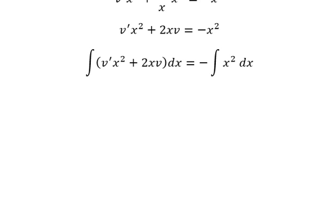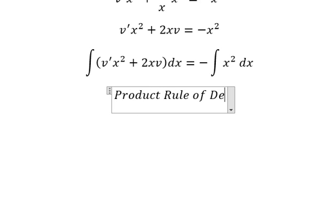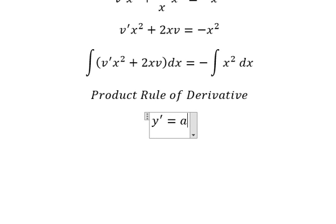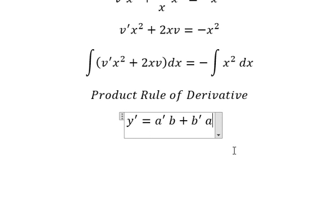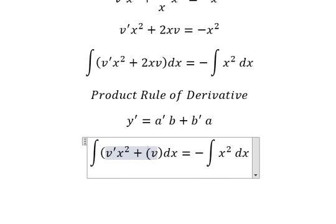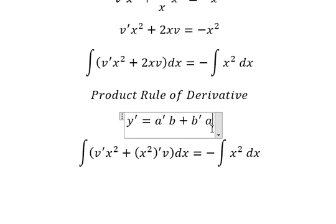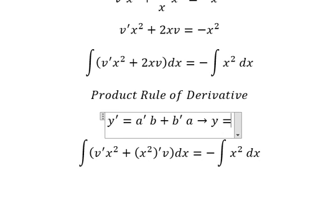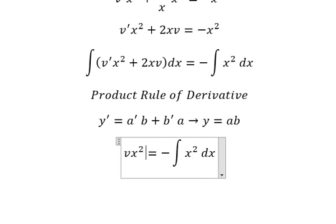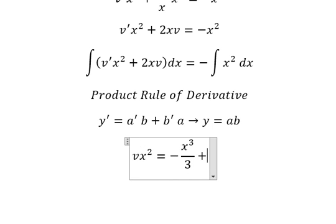We can use the product rule of derivatives: the first derivative of A times B equals A prime times B plus B prime times A. Recognizing the left side as a product rule form, the integration gives us v times x squared on the left. On the right, the integration gives us x cubed over 3 plus constant C.